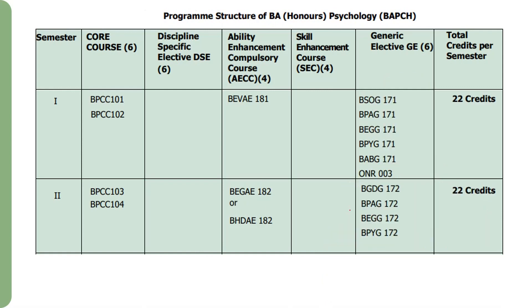The second point is course selection. This covers the first semester and second semester. In the first semester, we will choose the courses. In the second semester, we will divide the papers into five categories.